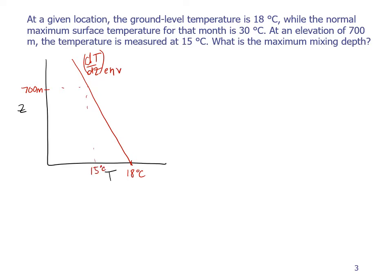And then for our maximum temperature that we're concerned about, we need to think about 30 degrees Celsius. And that is where our adiabatic lapse rate line will pass through.